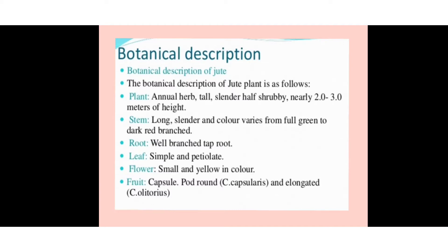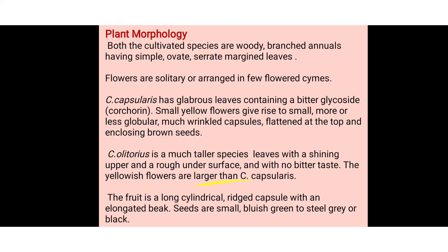In Corchorus capsularis the capsules are round, while in Corchorus olitorius the capsules are elongated. Both cultivated species are woody, branched annuals with simple, serrate-margined leaves. The inflorescence is solitary or arranged in a few-flowered cymes.